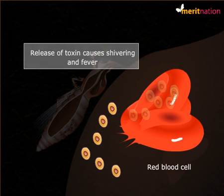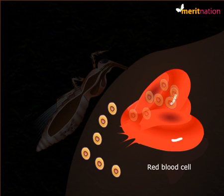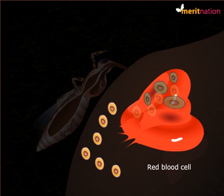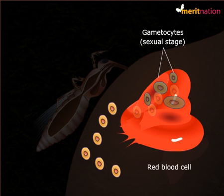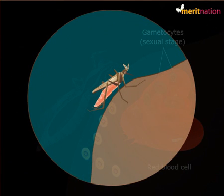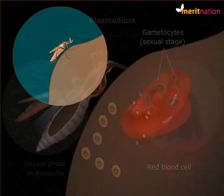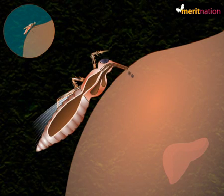Some merozoites in the blood develop into special cells called gametocytes, which are the sexual stage of Plasmodium. Red blood cells containing gametocytes do not rupture. These gametocytes are then taken up by the female Anopheles mosquito along with the blood when it bites an infected person.